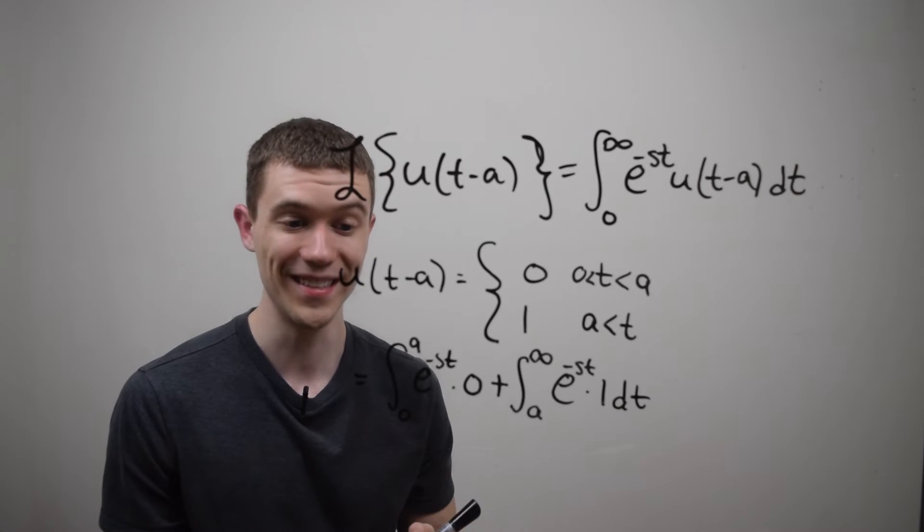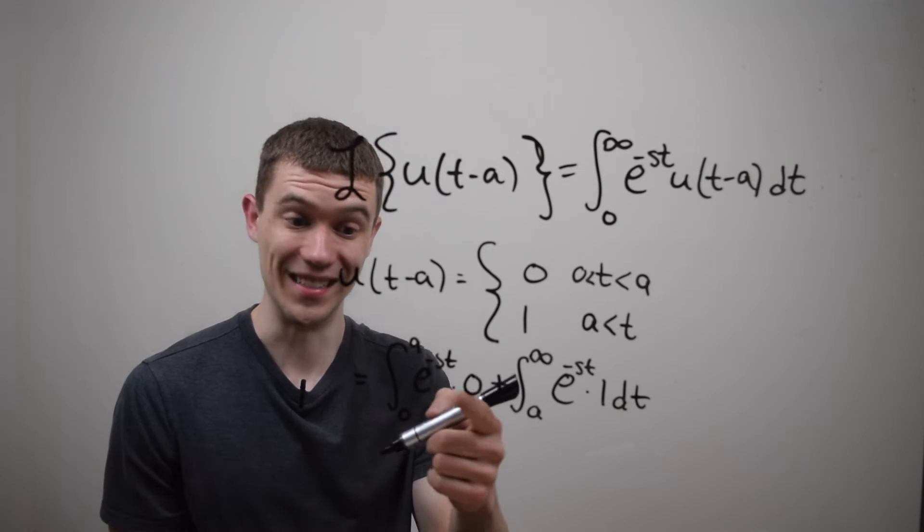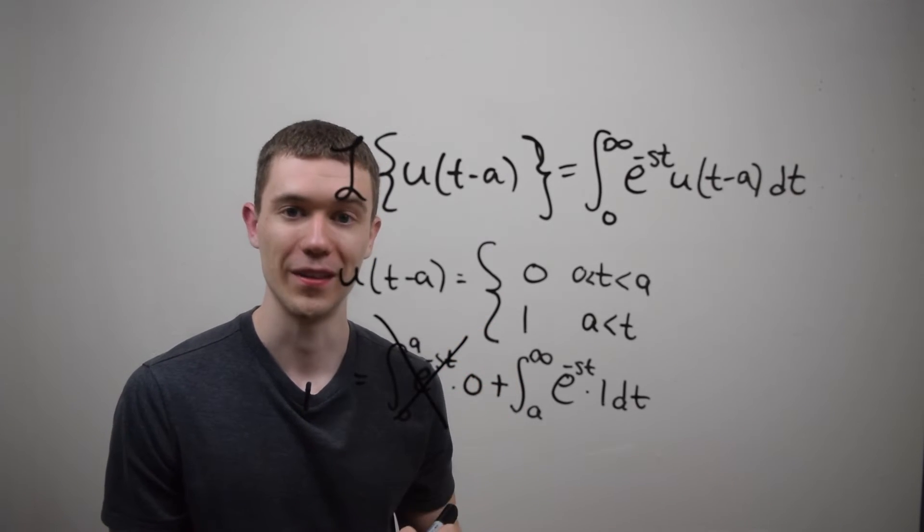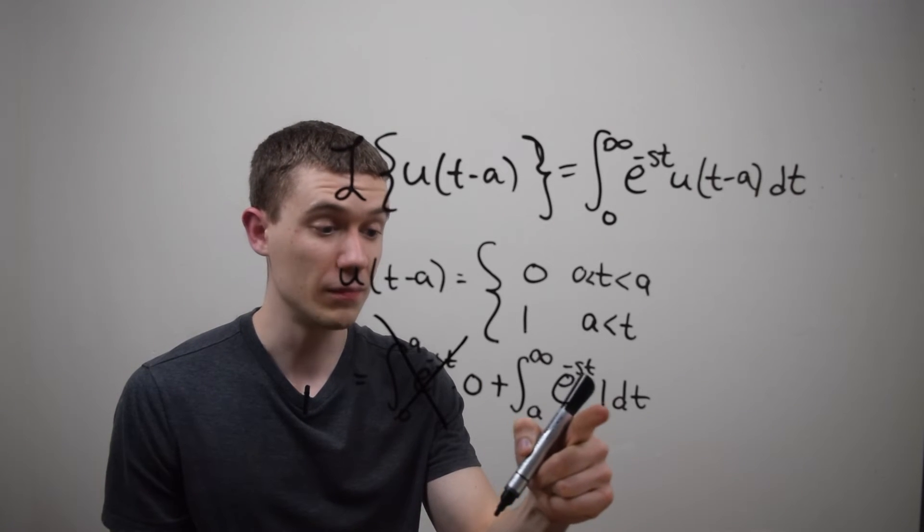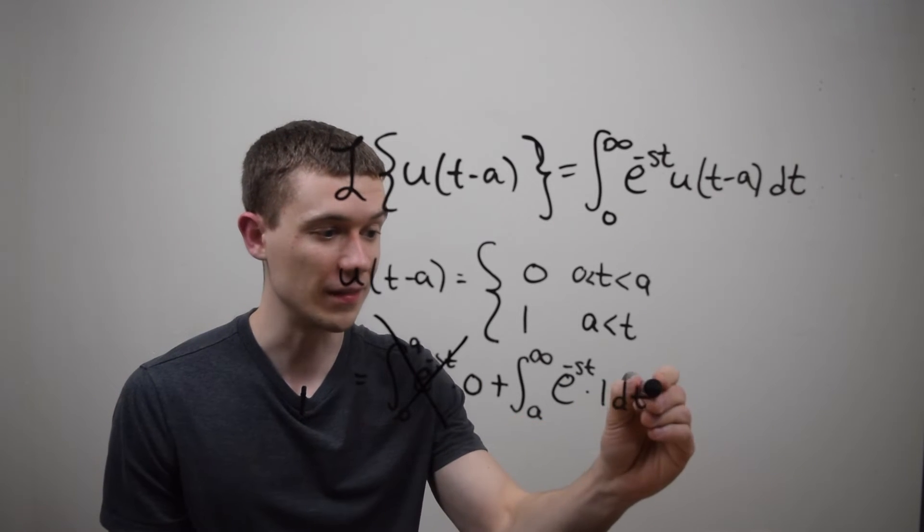Well this one's pretty easy, right? The integral of zero is zero, I don't really need to worry about that at all. And here, multiplying by one, that's not really going to affect anything.